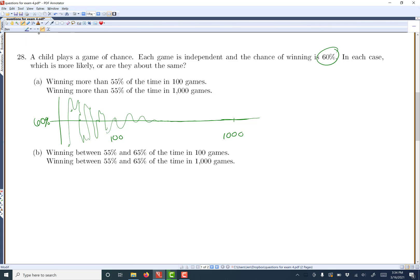And so we want to be more than 55%. So here's my 55% and I want to be above that. So at 100, notice that you might be above it, but you might also be below it and you don't want that. But by the time you get to 1,000, you're almost guaranteed to be above 55%. So you'll be more likely to be above 55% at the 1,000.